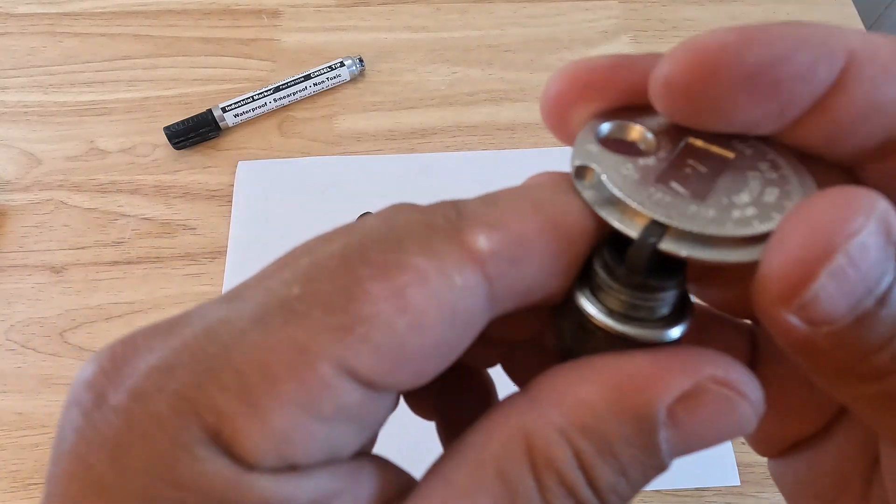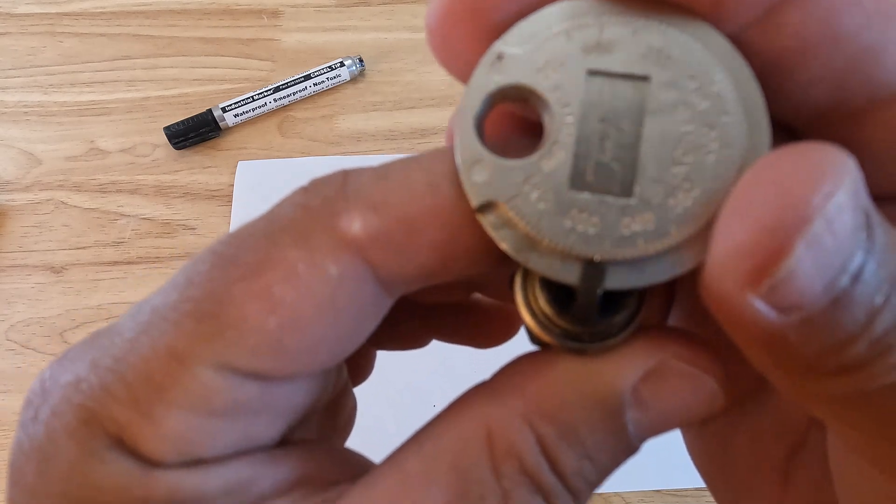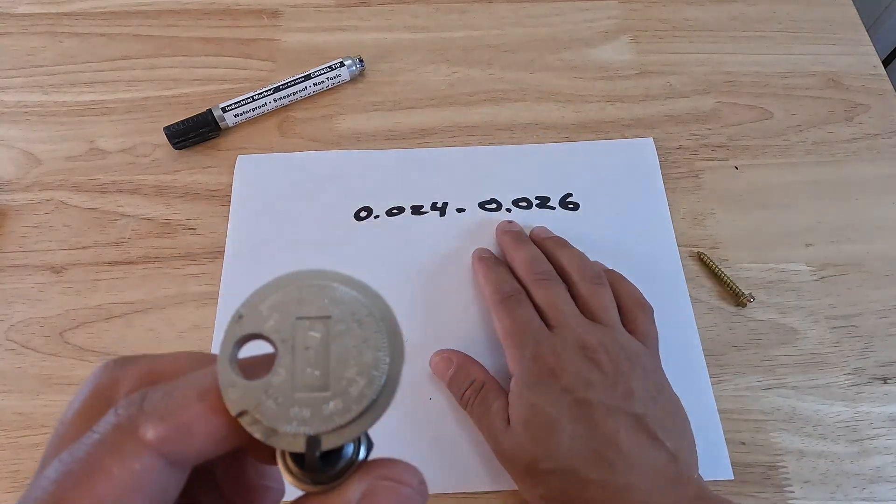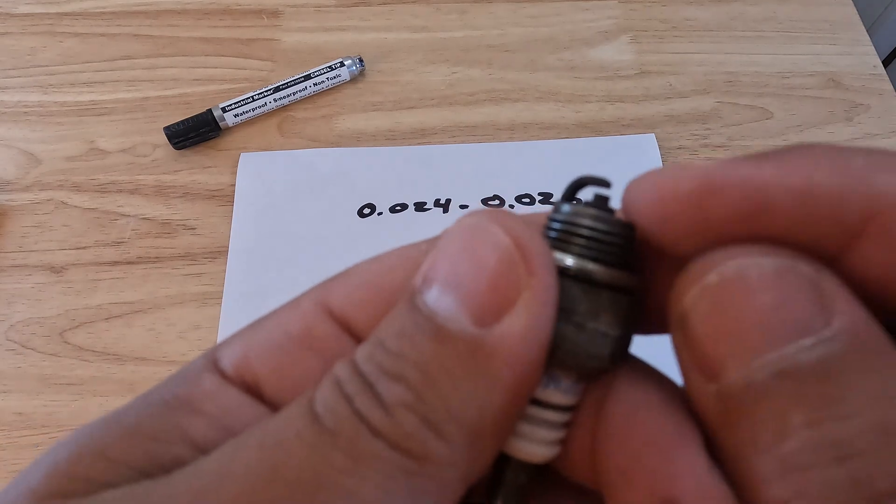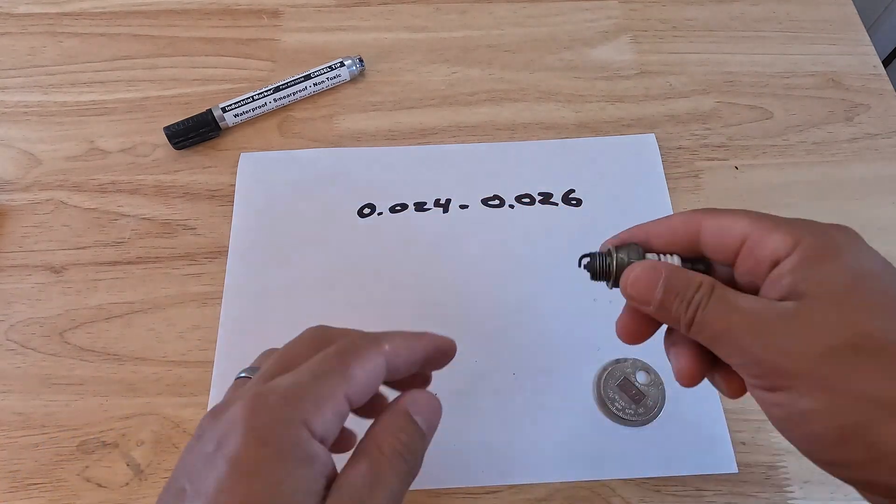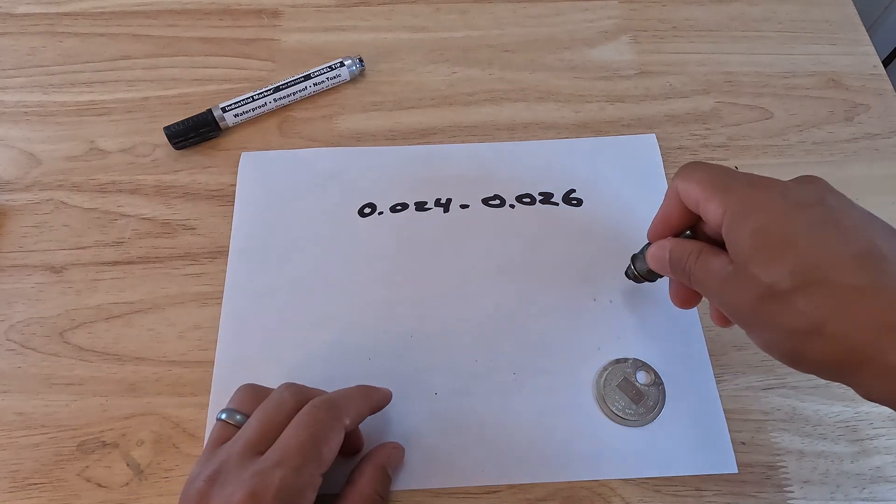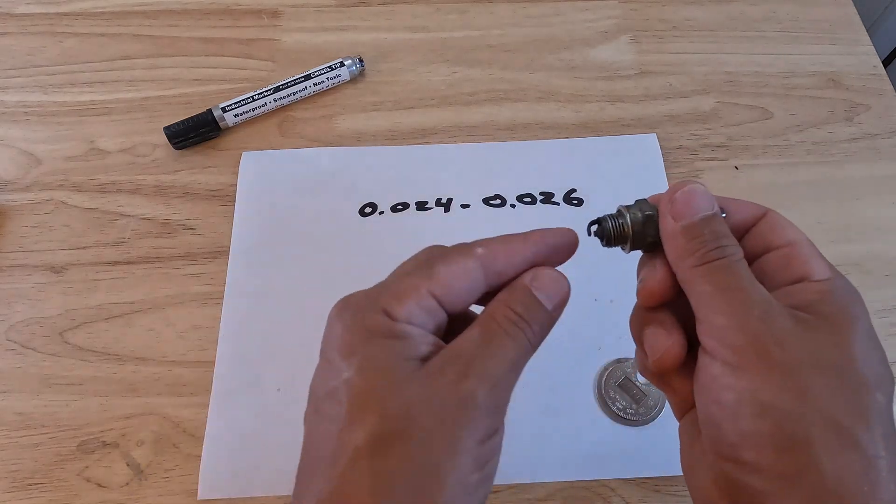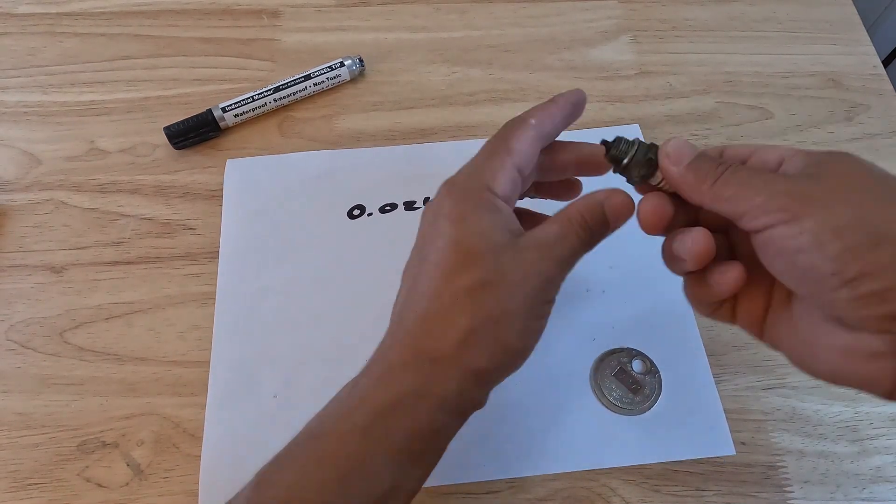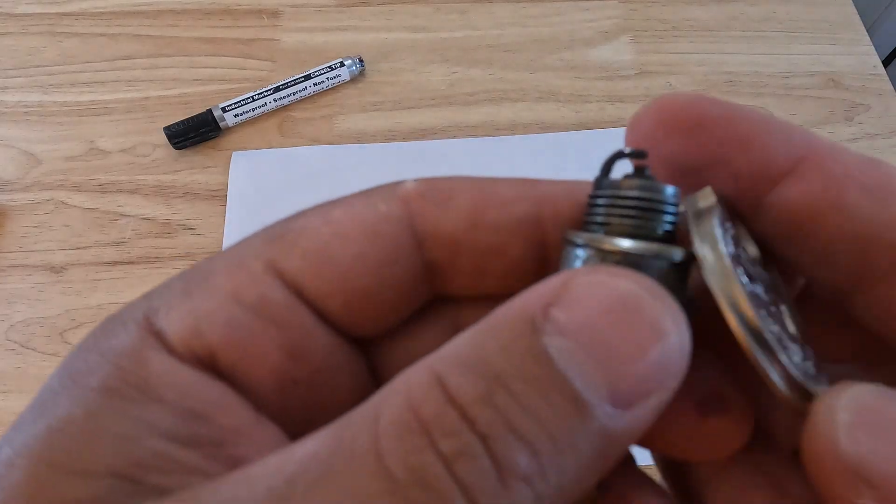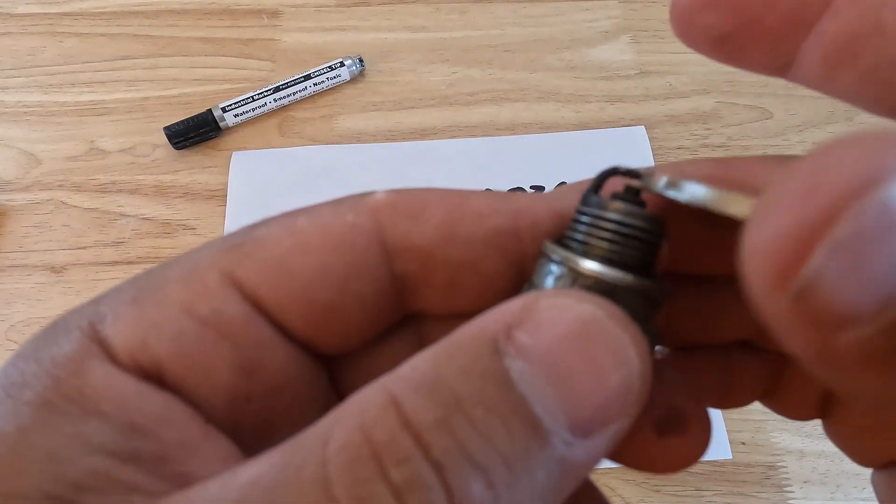We could open it even further to show you. So now we're at 0.035. Let's say we saw this, we knew our range and we said okay, well we need to decrease this gap. You could just take the spark plug and you could either tap it down on something to close that gap, or you could just give it a gentle little press and that should close the gap up a little bit.